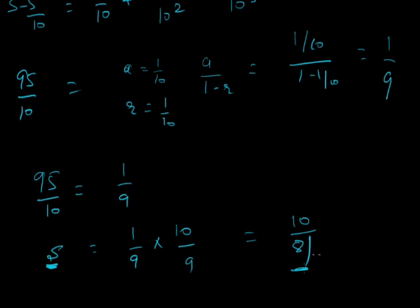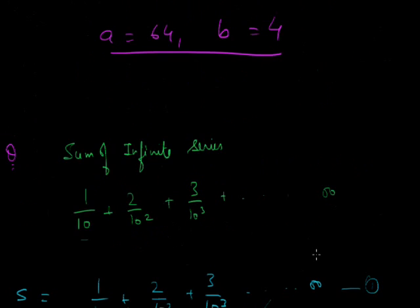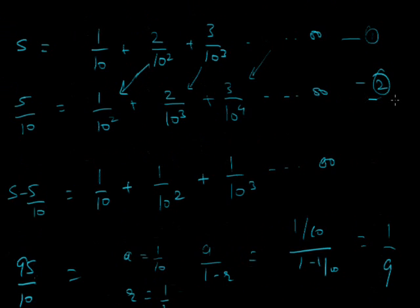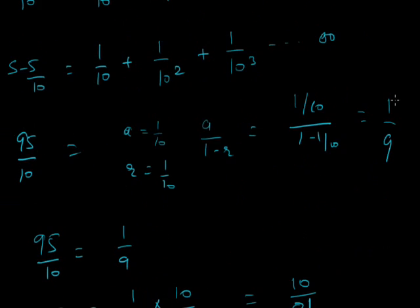The sum of this mixed AP-GP series is 10/81. This is a very important and interesting technique — when numerators form an AP and denominators form a GP, you multiply by the common ratio and subtract to get a pure GP.